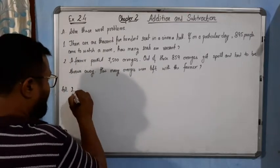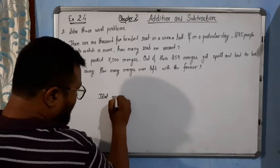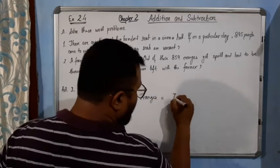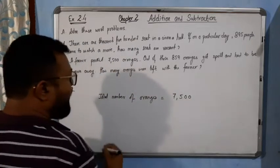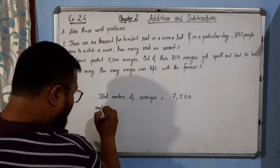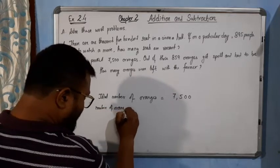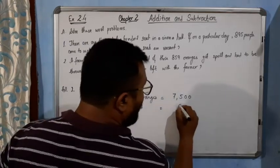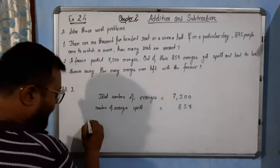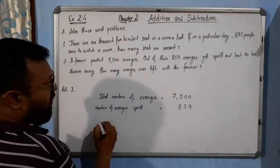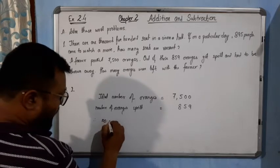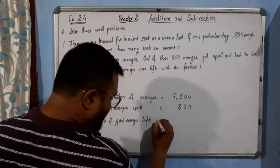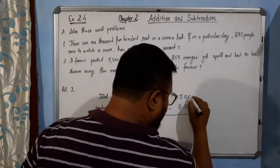See here. In question number 2, total number of oranges equals 7500. Number of oranges spoiled equals 859. Therefore, number of oranges left equals subtraction, same thing.